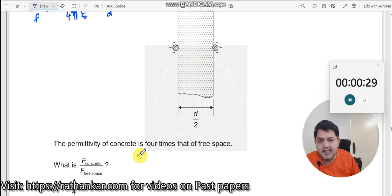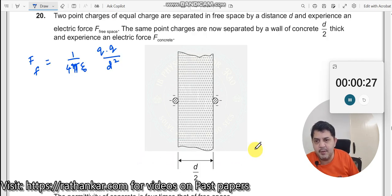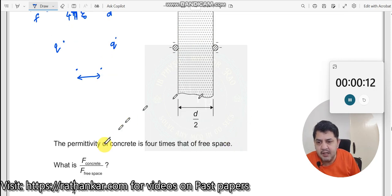And then the permittivity of concrete is 4 times that of free space. Now what I am doing is that initially I had two charges which were Q and Q separated by d. Now I bring these two charges closer and I see to it that I put a different material whose permittivity of concrete, the relative permittivity of concrete epsilon r is equal to 4 times that of the free space. So therefore, I will put this epsilon r is equal to 4.